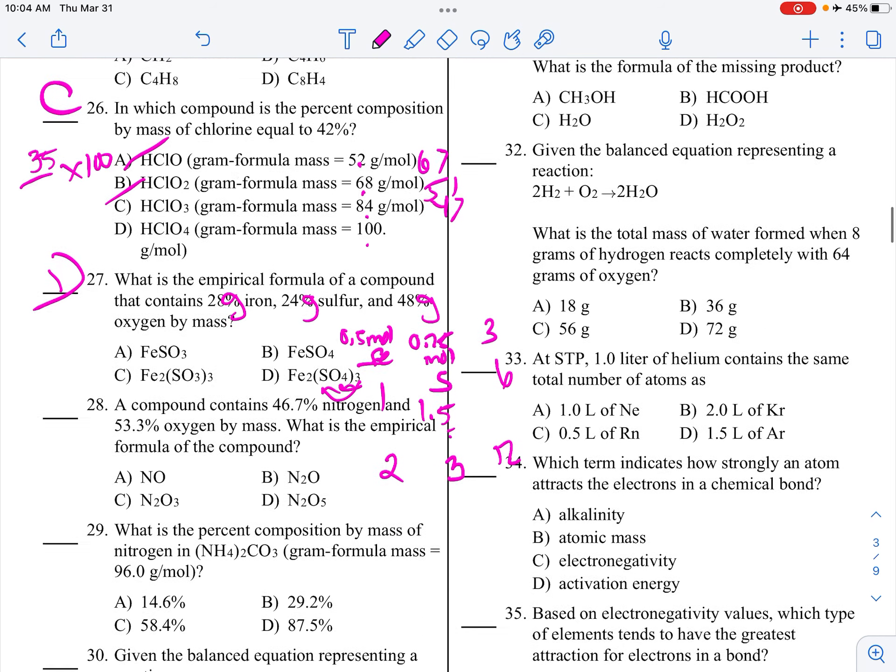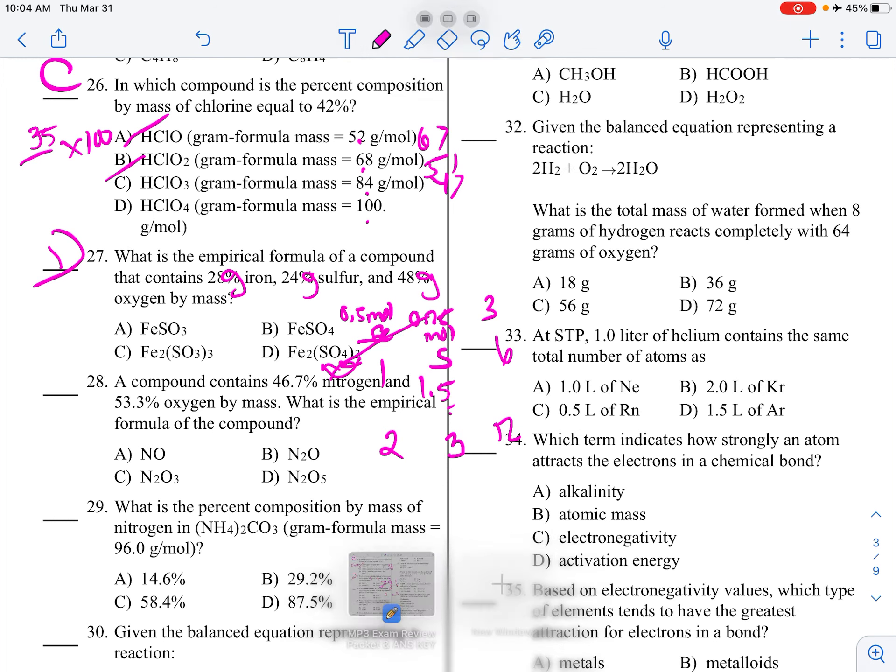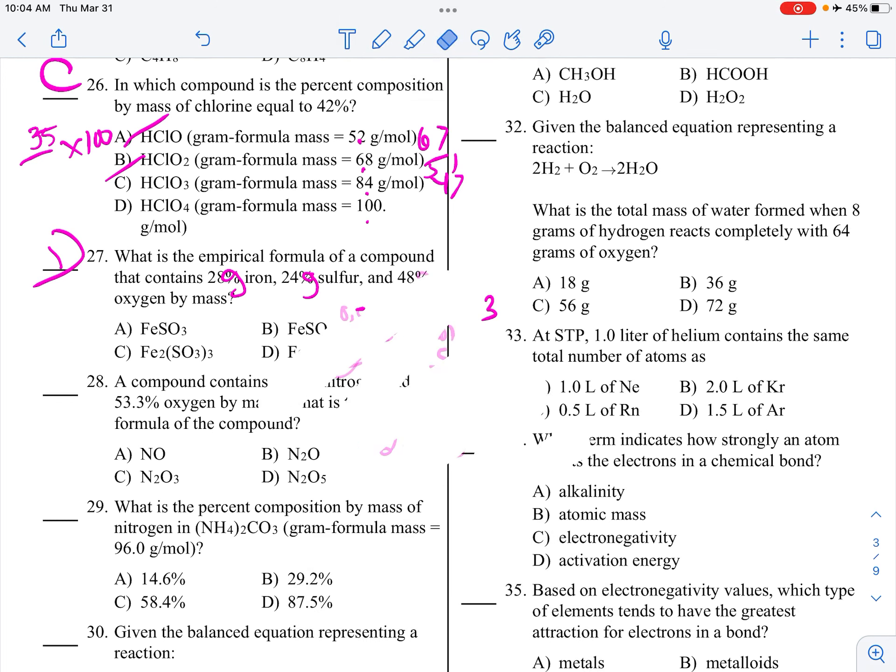Another one. Percent. So, make these grams. So, 46.7 divided by the mass of nitrogen, which is 14. So, that's going to be 3.33 moles of nitrogen. 53.3 divided by the mass of oxygen is 16. So, oh look, it's the same. So, it's going to be a 1 to 1 molar ratio. So, NO. Very good.